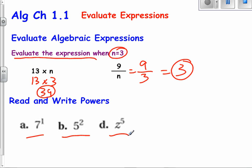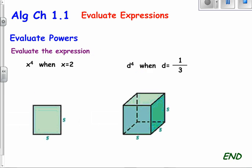Z to the fifth power, or z to the power of 5. So that's how you kind of read and write those. So let's see what's next here.